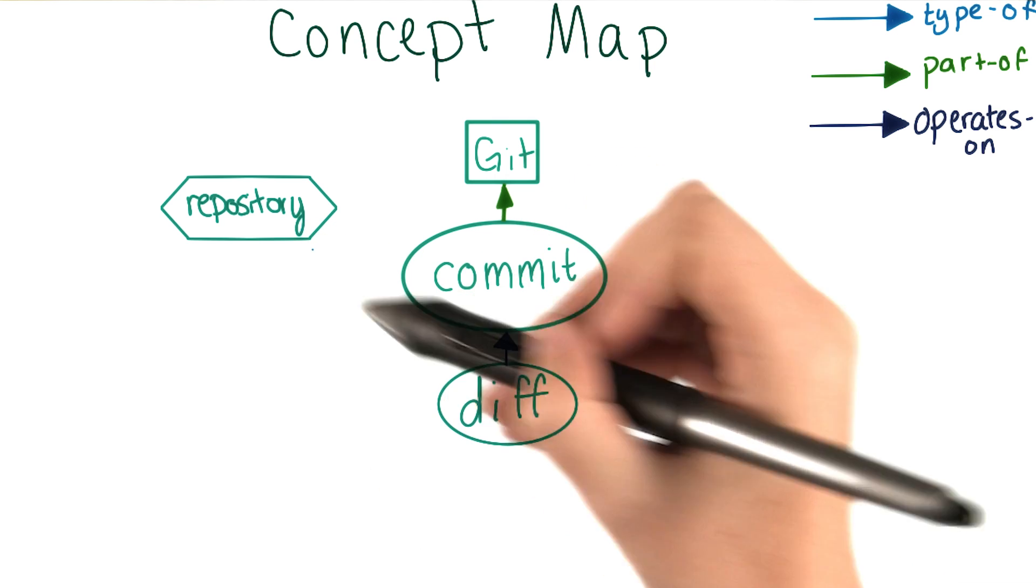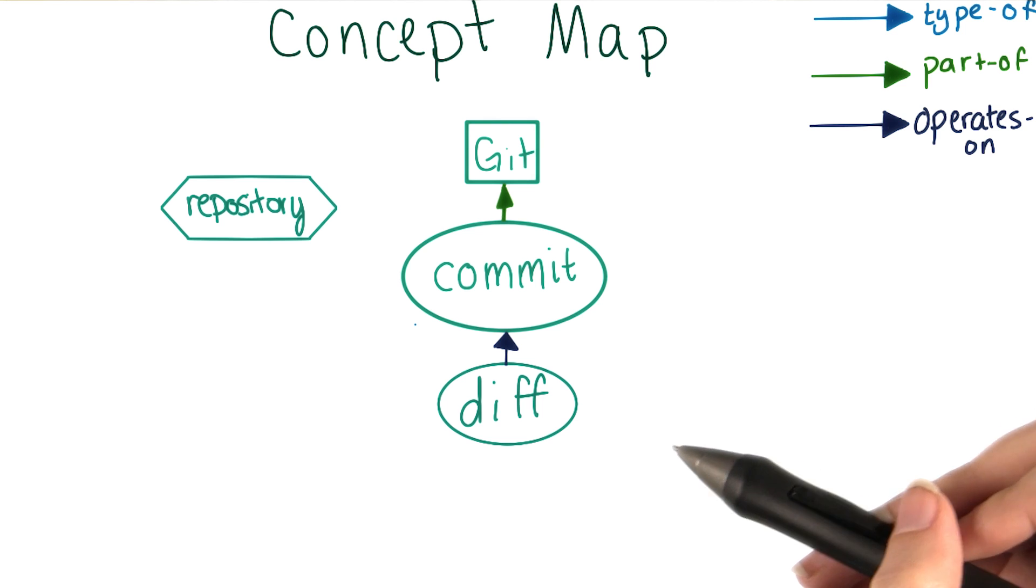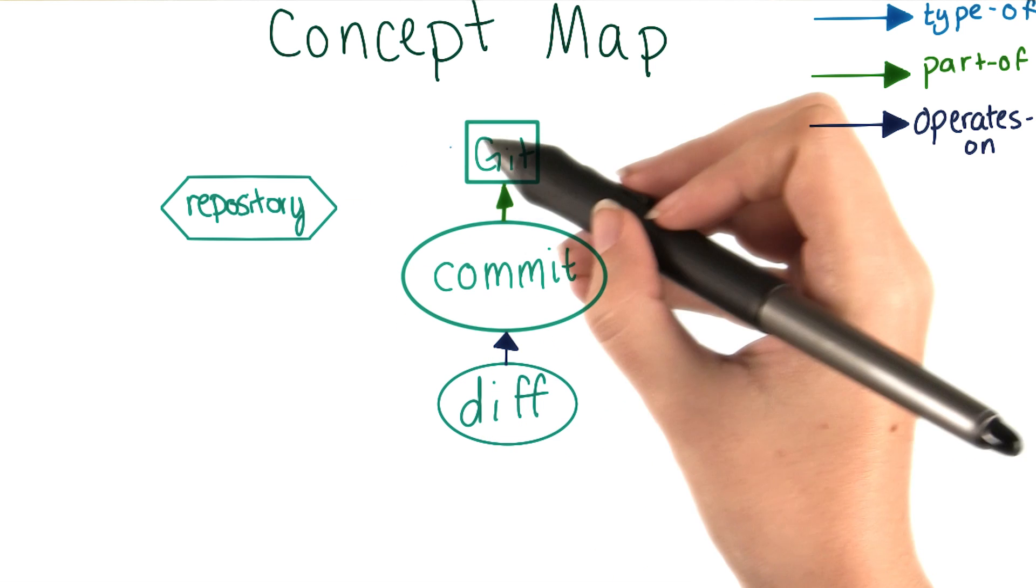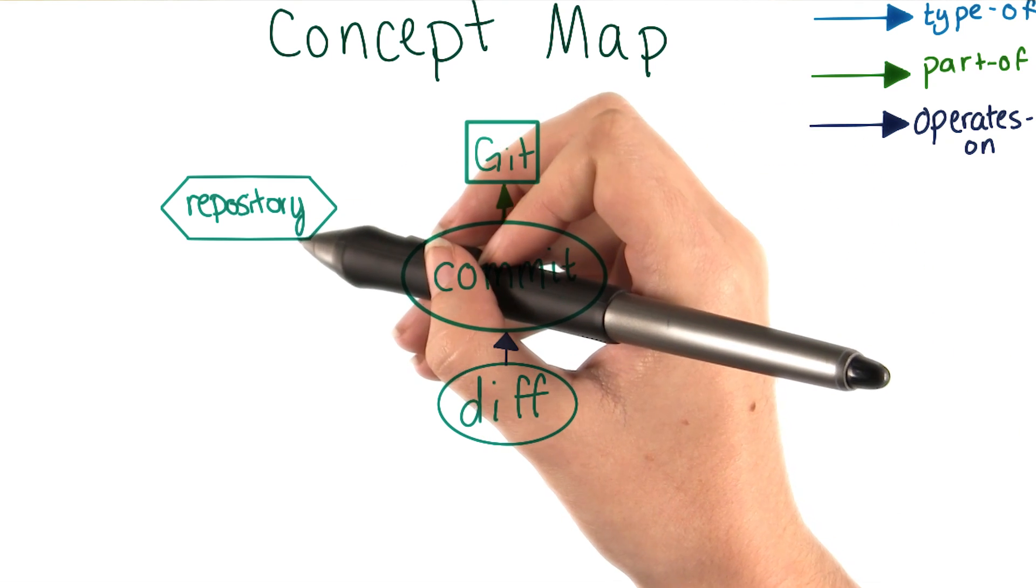How do commits interact with a repository? How are they connected? At this point, it's important to remember that the current graph is not set in stone. We can modify it to add new nodes between already connected ones. Repositories are a part of git, and commits are parts of repositories. So let's add those two connections.